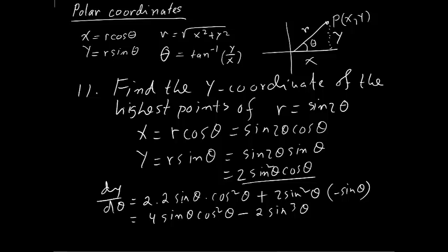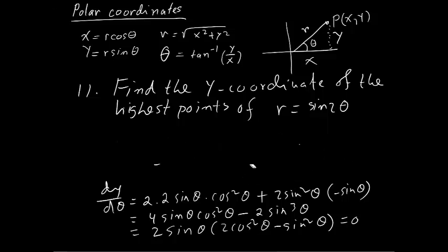We write this equal to 0 because dy d theta needs to be 0. Factor out 2 sine theta, so you get 2 cosine squared theta minus sine squared theta equal to 0. We're looking for max value.